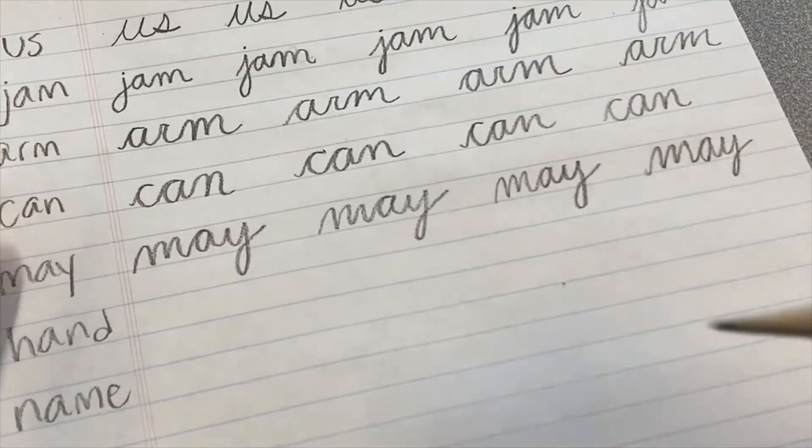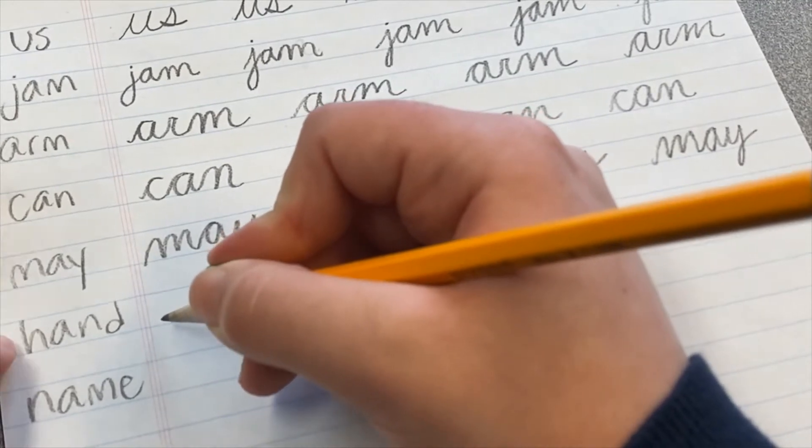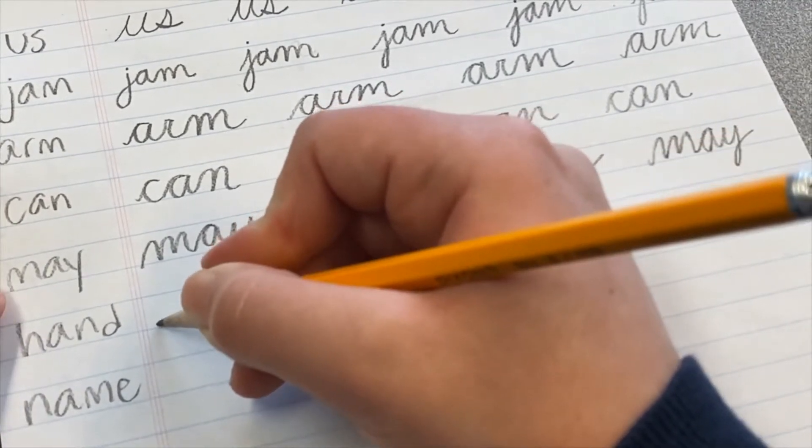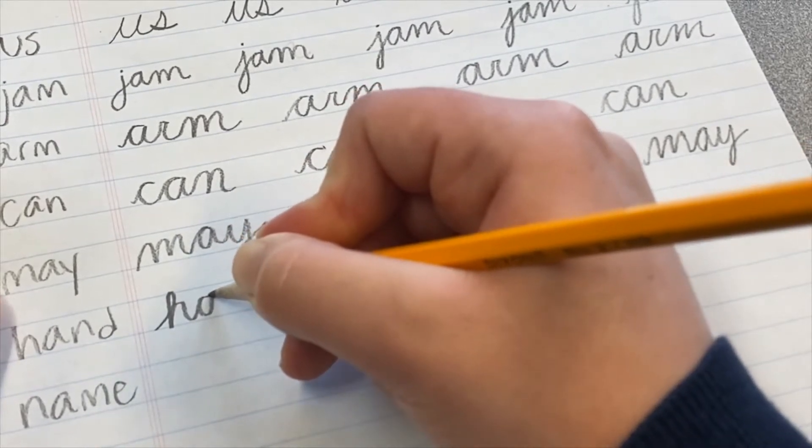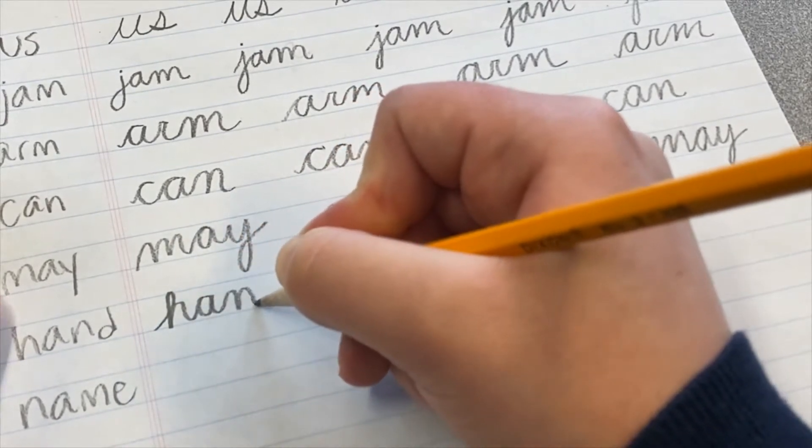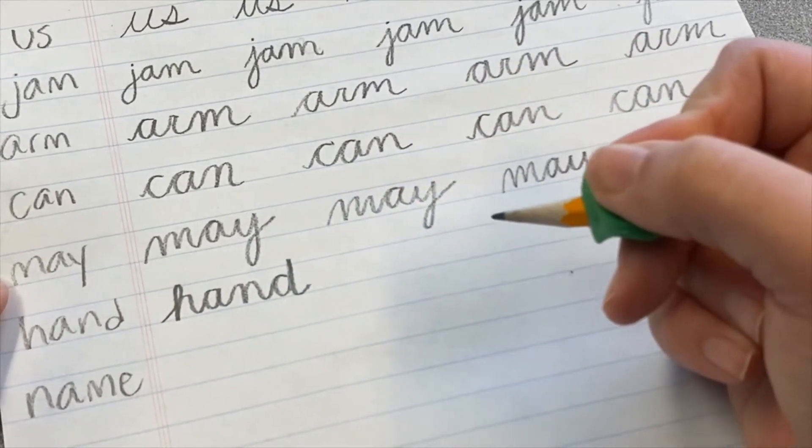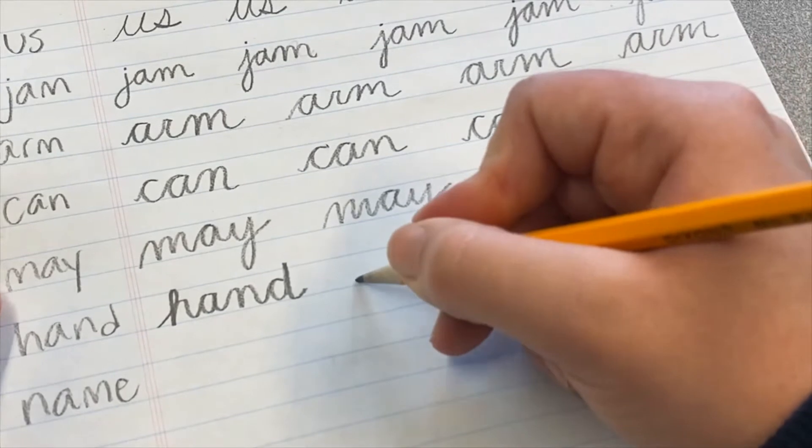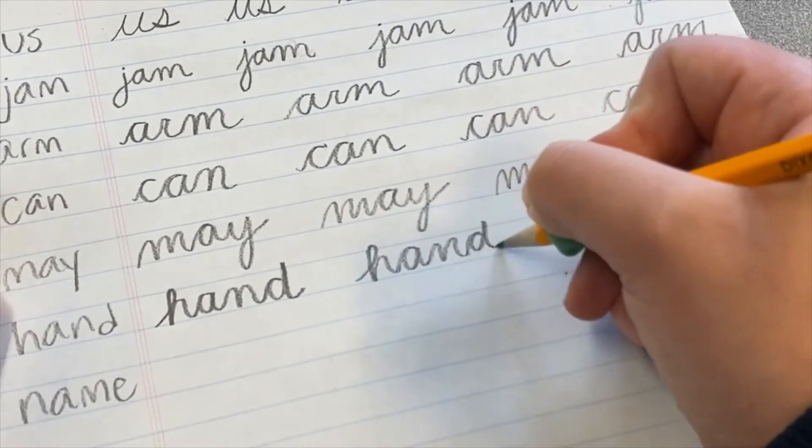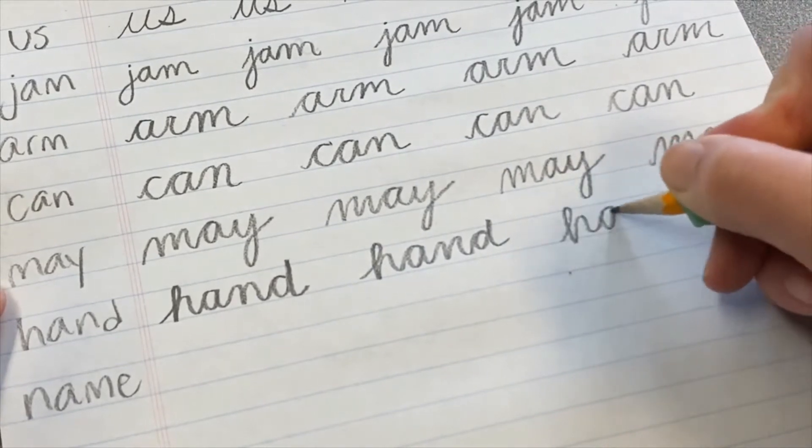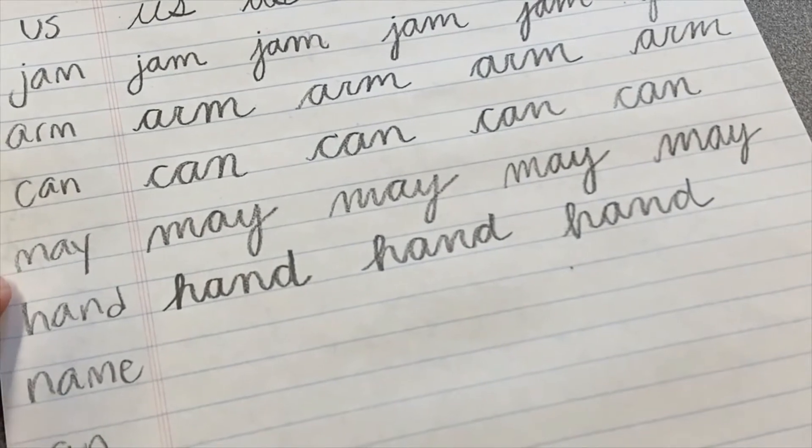Up next, we have the word hand. So our H is a little bit like our printed letter H. It has a loop in there. We'll go right into the A, right into the N, and then D slides up and slides back down. We have the word hand in cursive. H-A-N-D.